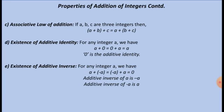Properties of addition of integers continued. Associative law of addition: if a, b, c are three integers, then (a plus b) plus c equals a plus (b plus c). Existence of additive identity: for any integer a, a plus 0 equals 0 plus a equals a; here 0 is the additive identity. Existence of additive inverse: for any integer a, a plus (minus a) equals (minus a) plus a equals 0. So the additive inverse of a is minus a, and the additive inverse of minus a is a.